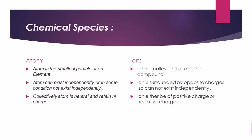An ion is an entity which will lose or gain electrons. The atom is the smallest indivisible unit — it cannot be broken down into its constituent pieces, as it is the purest form of an element. An atom exists independently or may not, depending on conditions. Collectively, an atom is neutral — there is no charge on it. It only retains a charge when it loses or gains electrons.